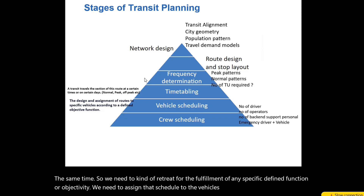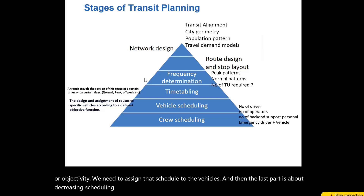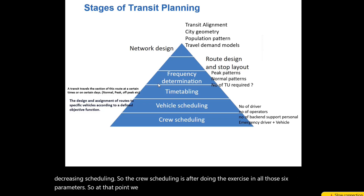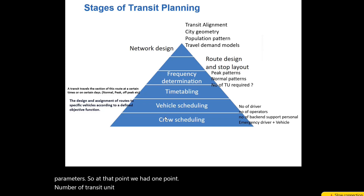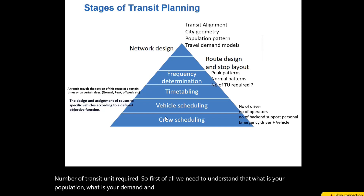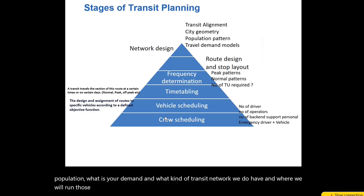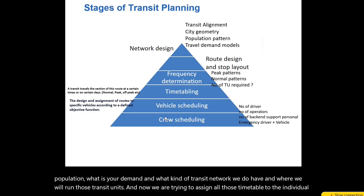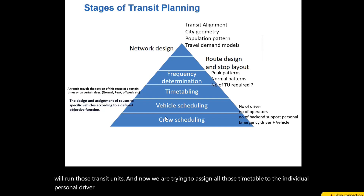The last part is crew scheduling. After completing the exercise across all six parameters, at that point we have the total number of transit units required. We need to understand the population, the demand, the transit network, and where those transit units will run. Now we assign all those timetables to individual personnel — drivers, operators, support staff, back-end support, and so on. Those are all the stages involved while planning for any transit lines.